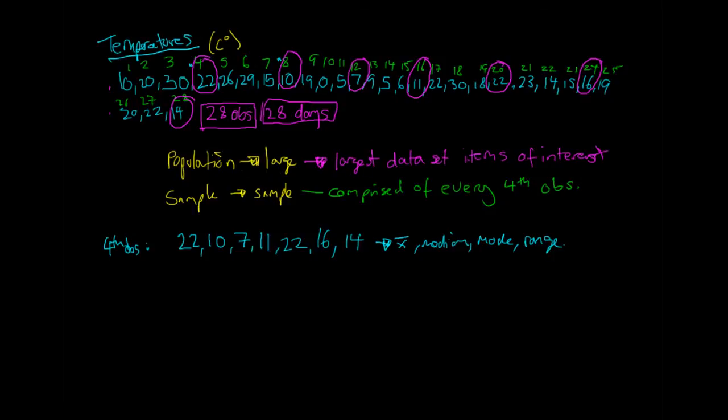Just remember that when we're talking population, we're talking about large. It's the largest data set for all of our items of interest. It contains every possible observation for our items of interest. And a sample is a smaller subset of our population.